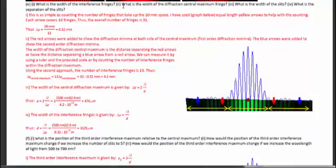The second question asks for the width of the central diffraction maximum, which is the region between the red arrows marked on the graph. Measuring using the scale, it spans approximately the central yellow arrow region plus about three fringes on each side — roughly 13 fringes wide. Multiplying 13 by the fringe width gives the width of the central diffraction maximum.